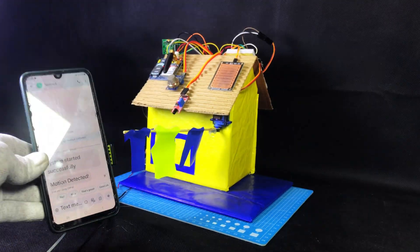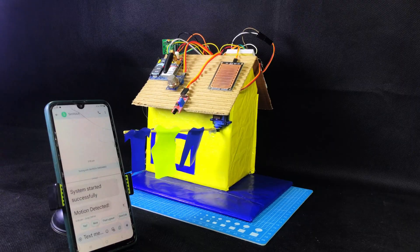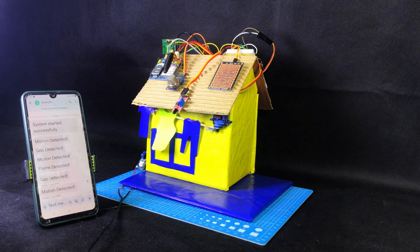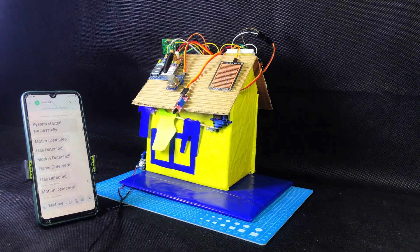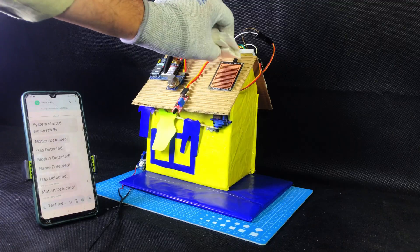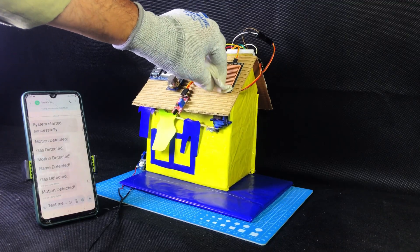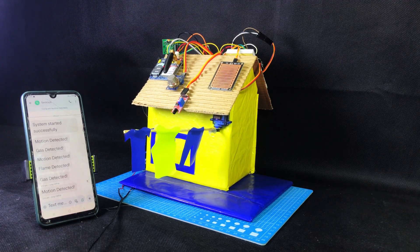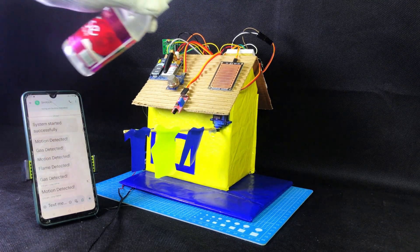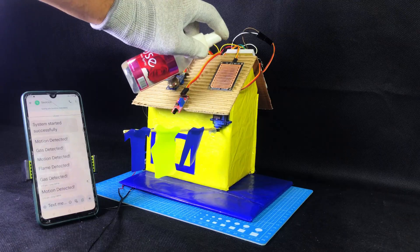Now finally, let's test the rain sensor. This bottle is filled with water. I will spray some water on the rain sensor to simulate rain. As soon as water touches the sensor, the servo motor will rotate and move the cloth to the safe side. Now, I wipe the sensor dry using a tissue paper. And look, the servo motor comes back to its original position.